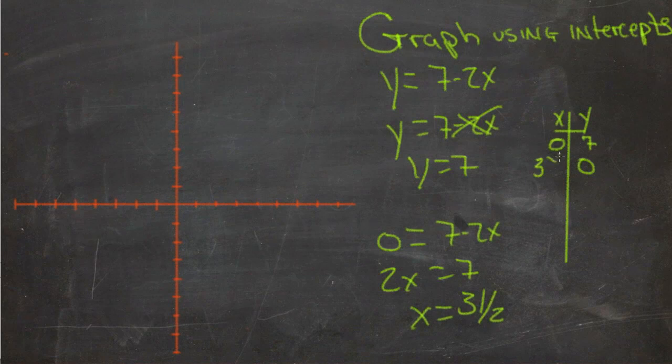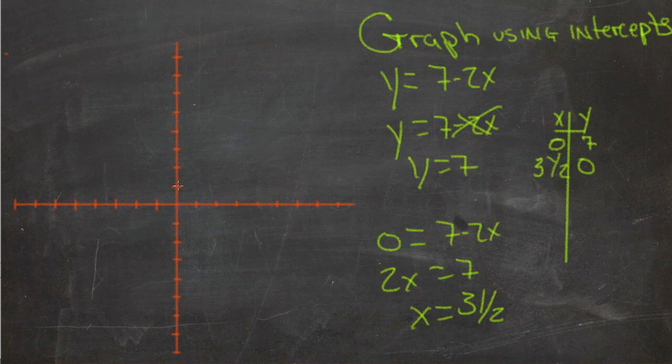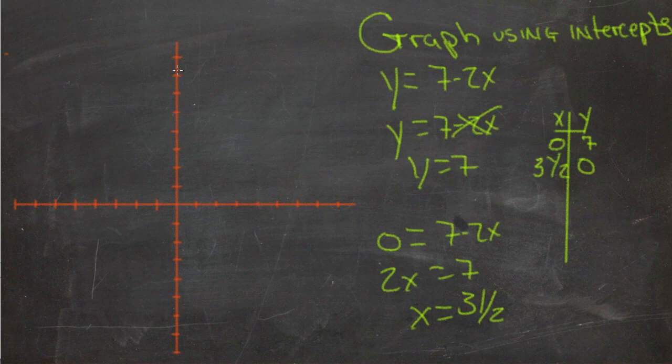So 3 and 1 half. So then y is 7. 1, 2, 3, 4, 5, 6, 7.